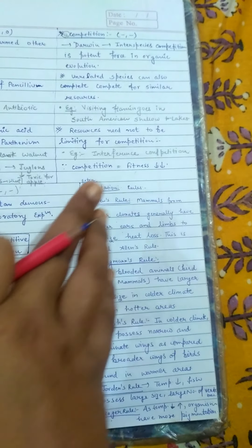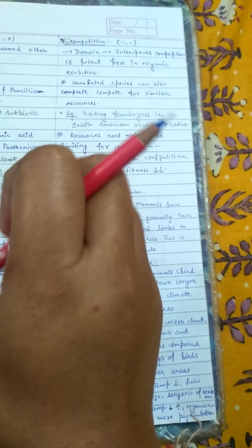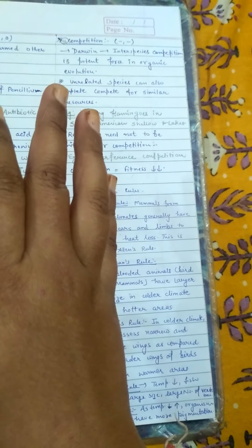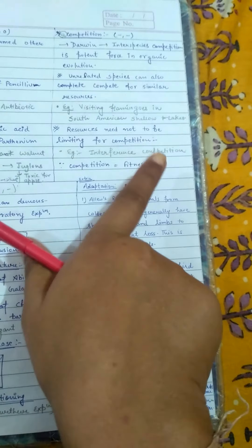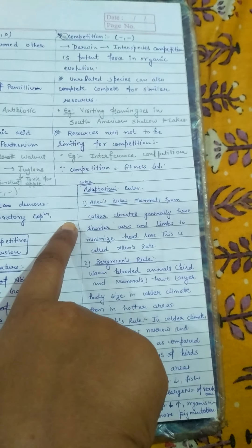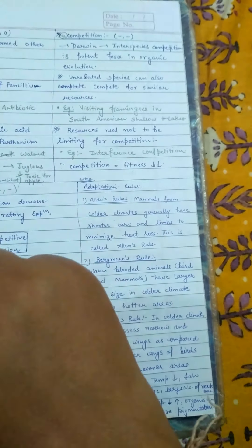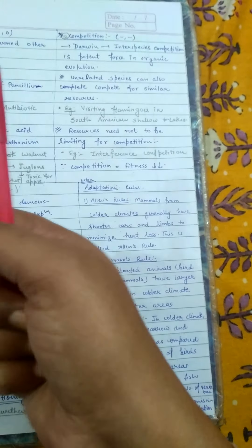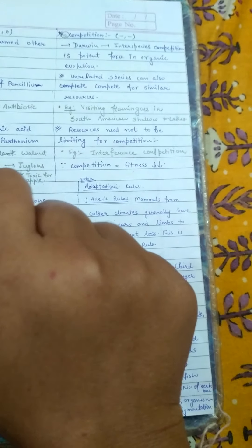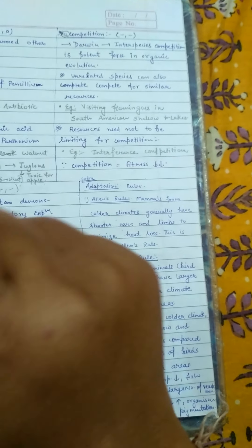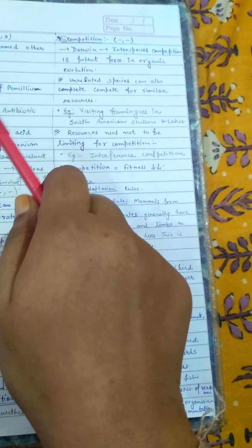In such a condition, the inferior species feels scared in the presence of the superior species. Even though their resources are neither limited nor the same, competition still occurs — and the inferior species loses. This is called interference competition, where the mere presence of the superior species causes harm. Ultimately, the more fit a species is, the better it can manage competition, and that species will win.